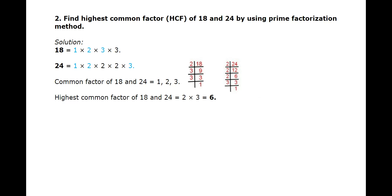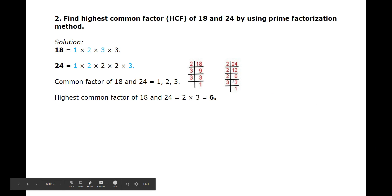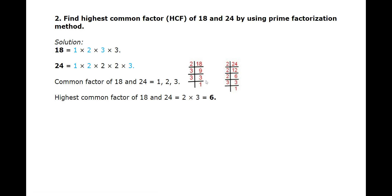The next example is: find the highest common factor of 18 and 24 by using the prime factorization method. The first number is 18. We take prime numbers and divide 18 by those numbers till the last number is exactly divisible. We get the factors 1 × 2 × 3 × 3.